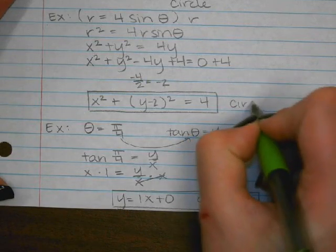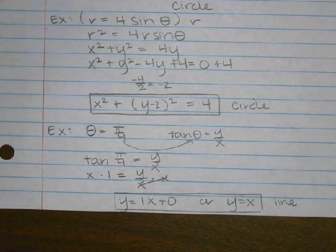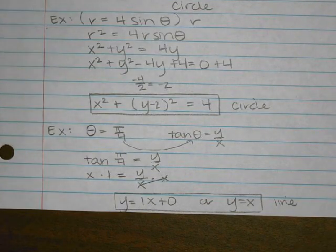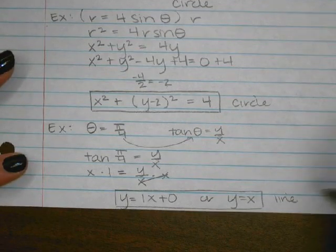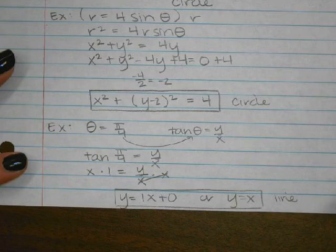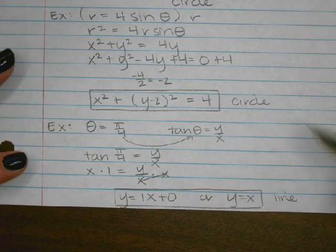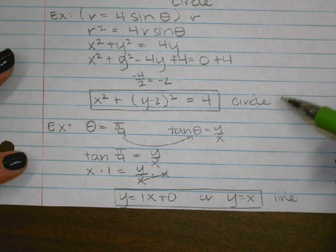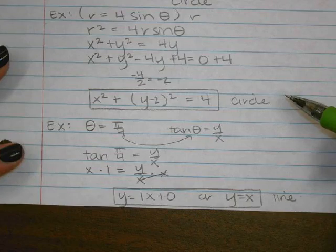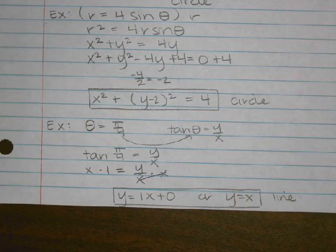That was a line, and the previous example was a circle. Pay attention to directions, because they might ask you just to identify what it is, or they may want more information — like 'a line with a y-intercept of 0 and slope of 1,' or 'a circle centered at (0, 2) with a radius of 2.' There are different levels of specificity when stating a recognizable equation.